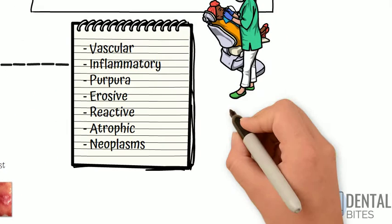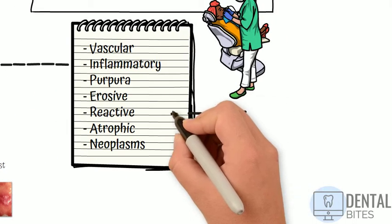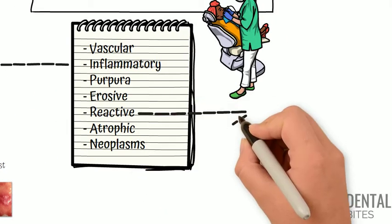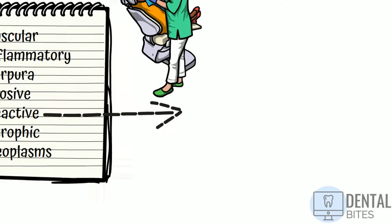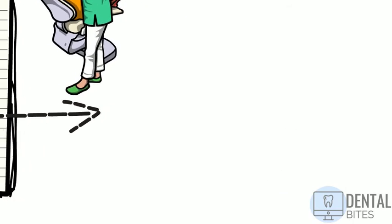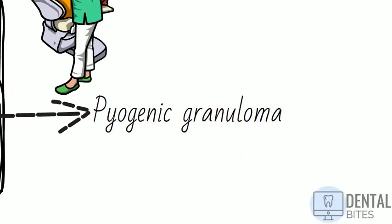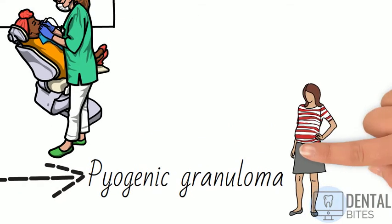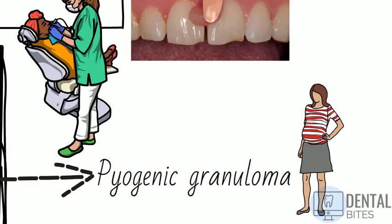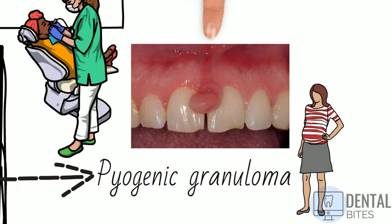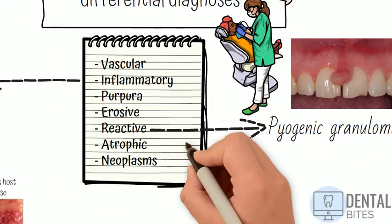So we've talked about inflammatory causes for red patches — let's move on to reactive causes. A classic example of this is pyogenic granuloma. This commonly affects pregnant women, which is why you may have heard it referred to as a pregnancy epulis. It's essentially a benign overgrowth of granulation tissue typically seen on the gingival margin, but it can occur at any site.